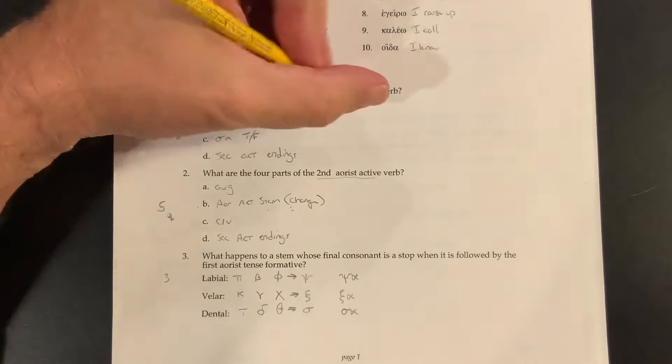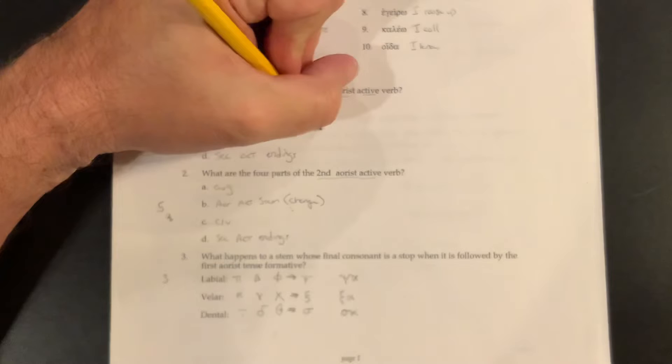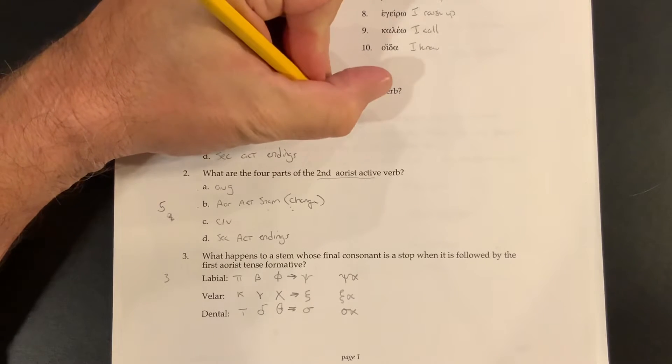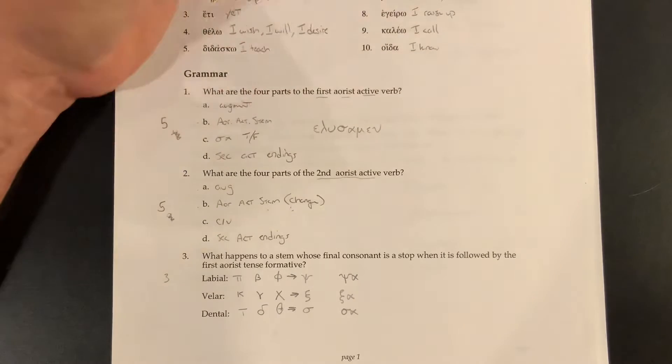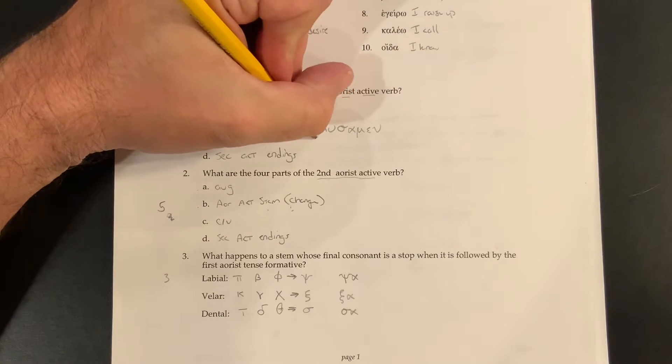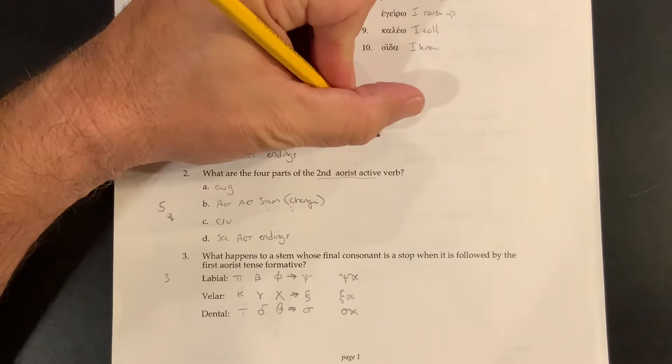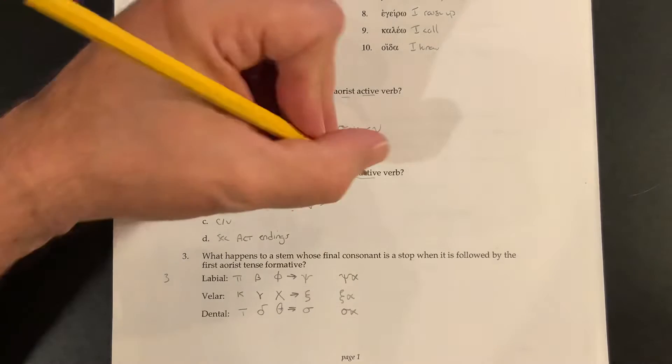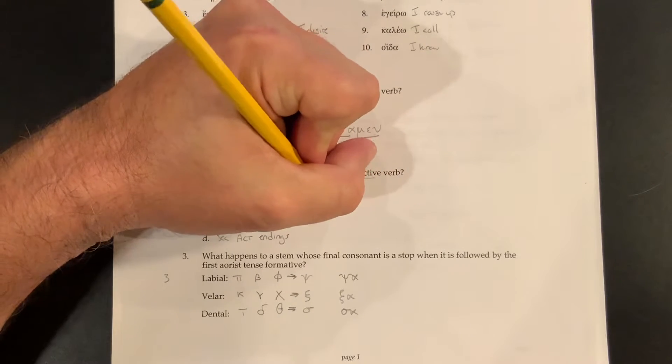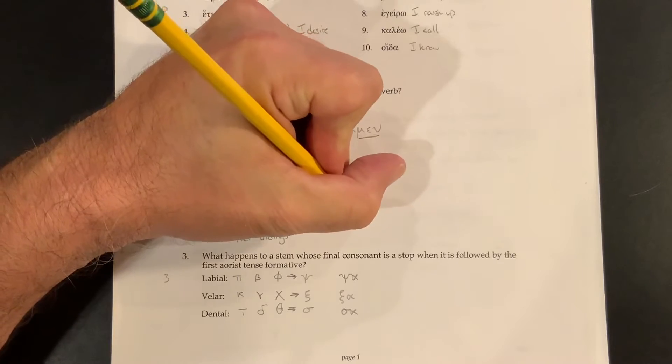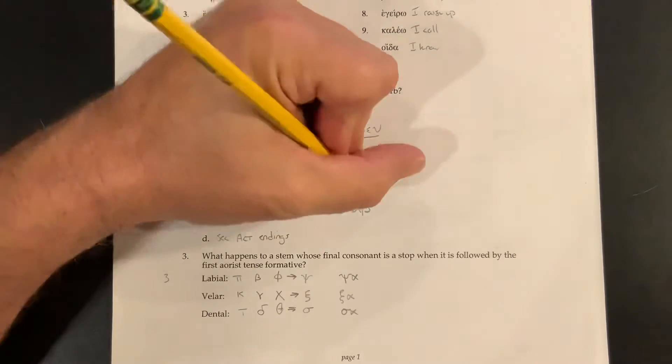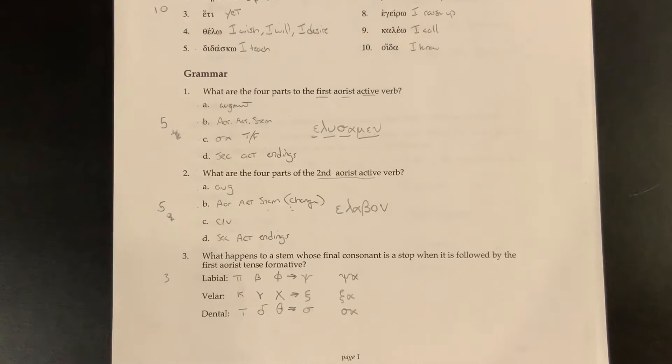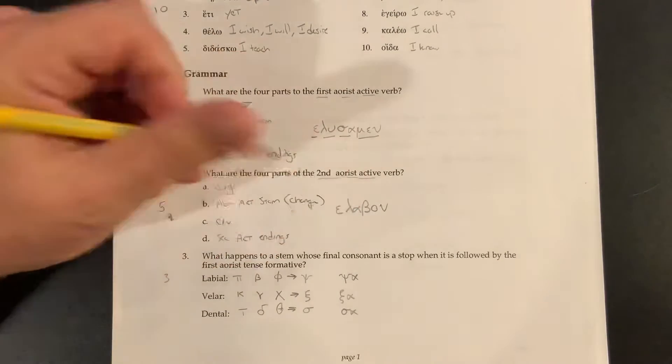So if we go back up here with our first Aorist, we notice that it would be elusa-men. Okay, augment, Aorist active ending, sigma tense formative, secondary active endings. And then our second Aorist, we have to use lambano. So we do augment, lambano, it's Aorist stem, connecting vowel, secondary active endings. Okay, so there we have it.